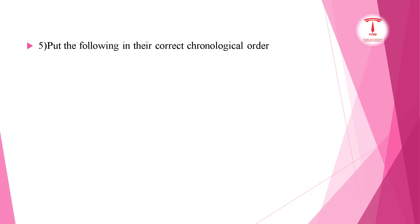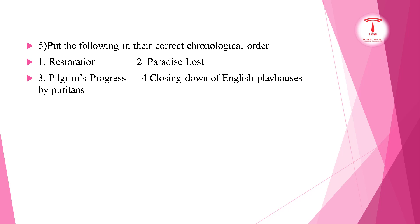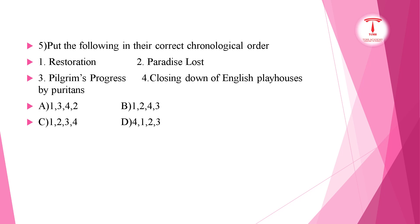Put the following in the correct chronological order: Restoration, Paradise Lost, Pilgrim's Progress, Closing Down of English Theaters by Puritans. You will see four options — A, B, C, D. The correct answer is 4, 1, 2, 3: Closing Down of English Theaters, Restoration Age, Paradise Lost, Pilgrim's Progress.